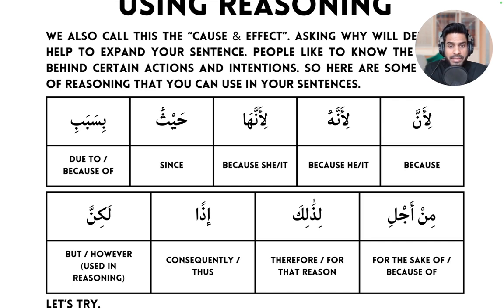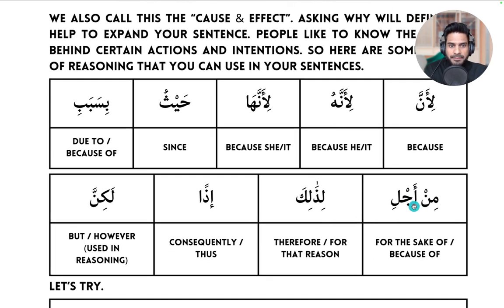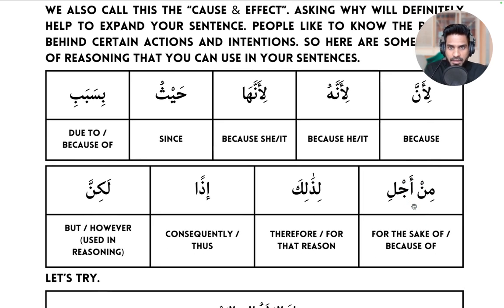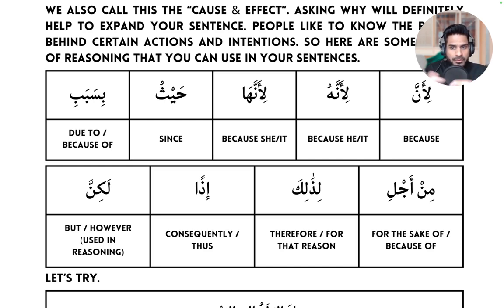حَيْثُ means 'since.' بِسَبَبِ means 'due to,' 'because of,' or 'for the reason of.' مِنْ أَجْلِ means 'for the sake of' or 'because of.' These particles are all interchangeable, so you can just plug in and play in the sentence. Normally we use لِأَنَّ, لِأَنَّهُ, لِأَنَّهَا, but you can substitute حَيْثُ, بِسَبَبِ, or مِنْ أَجْلِ.